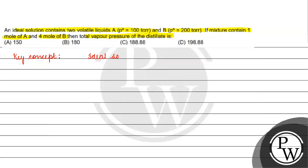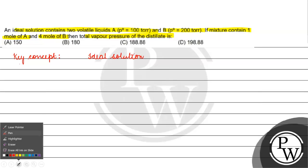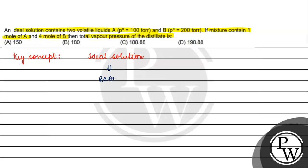The key concept for this question is ideal solutions. Ideal solutions are those that follow Raoult's Law. Raoult's Law states that the partial vapor pressure of any component in a mixture is directly proportional to its mole fraction. So for component A: PA = P⁰A × χA, where P⁰A is the vapor pressure of pure component A and χA is its mole fraction.